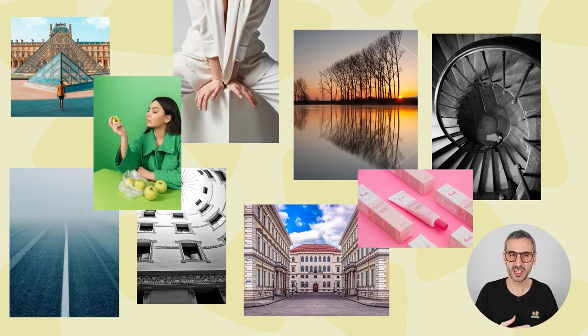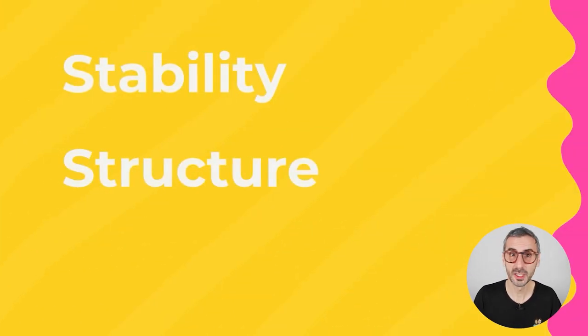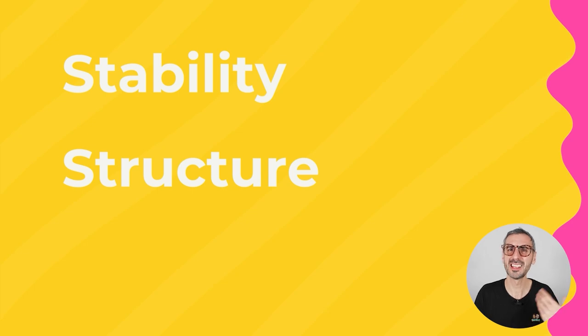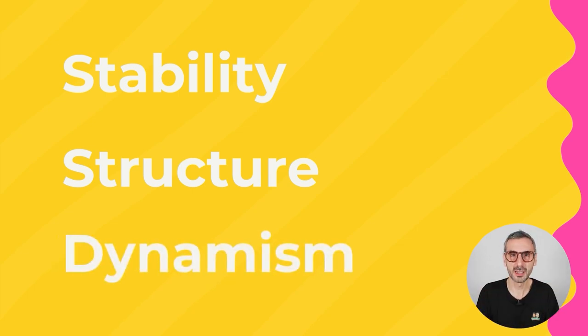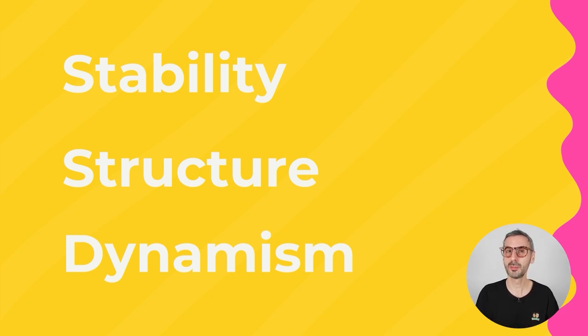The first word that comes to mind is stability, and then structure. When I look at well-balanced photos or designs, there's something aesthetically pleasing and comforting — we enjoy finding structure in what we're looking at, which brings order and satisfaction. Another word is dynamism, and we'll talk more about movement when we cover asymmetric balance in just a second.